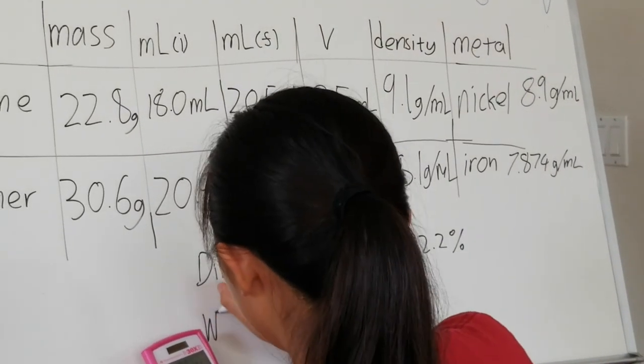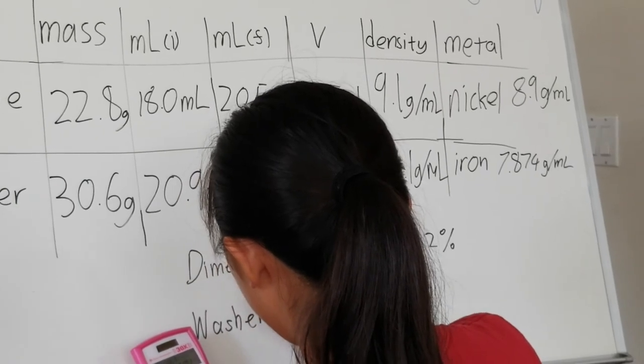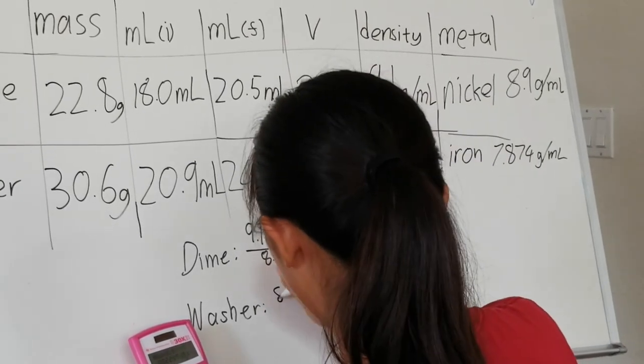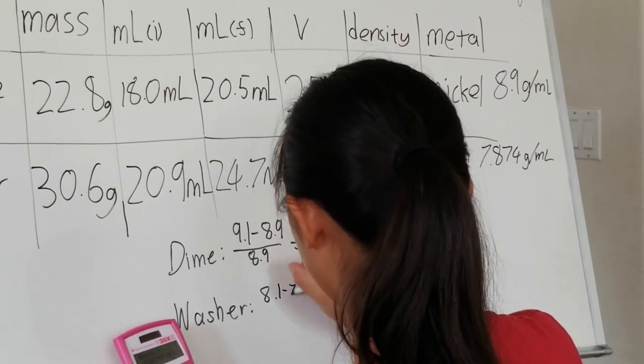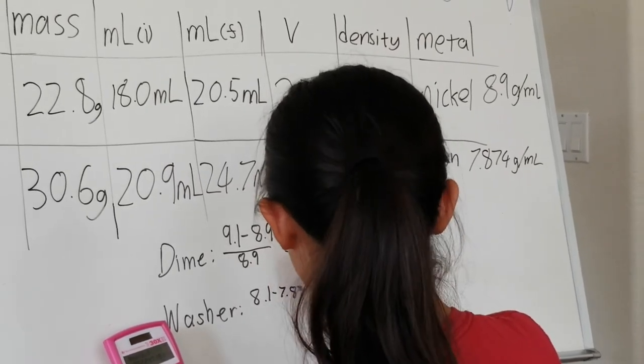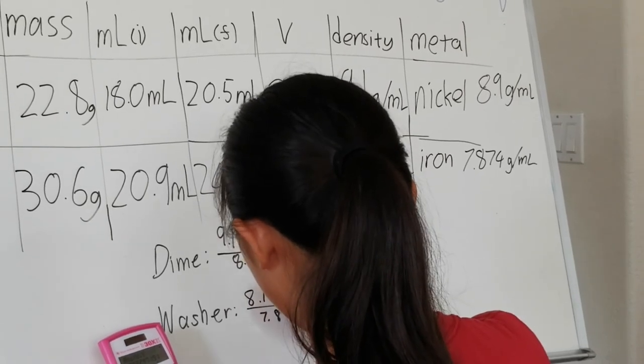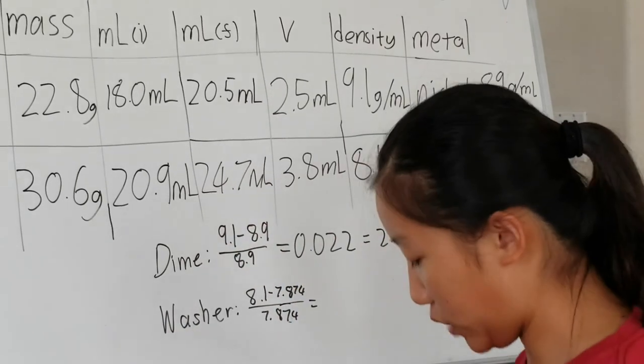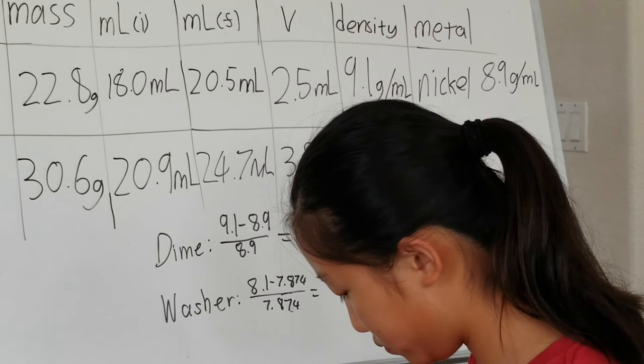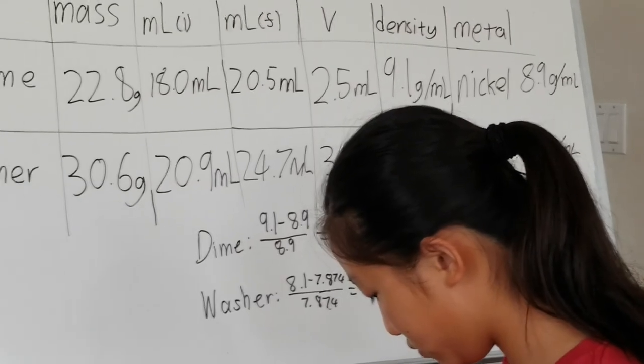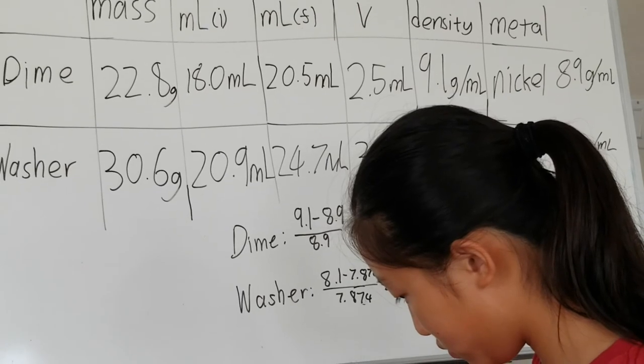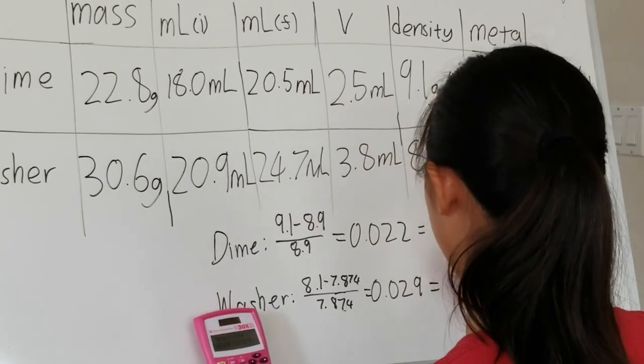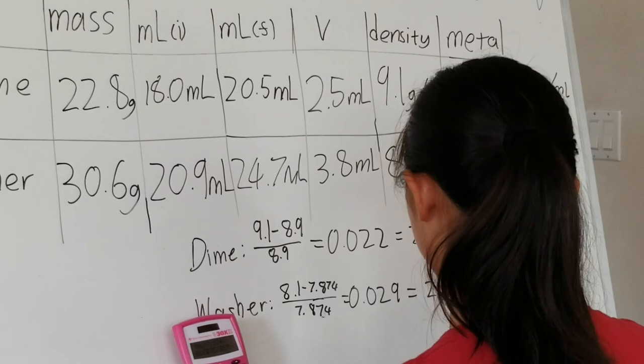For the washers, you would do the same thing. So the density you got, 8.1 minus their density, 7.874 divided by 7.874. And from that you would get 0.029, which is 2.9%. So your percentage error for the washers is 2.9%.